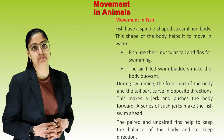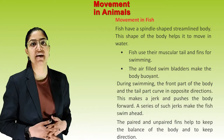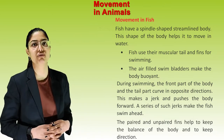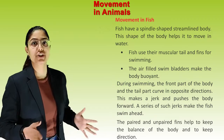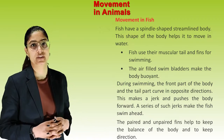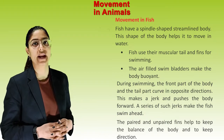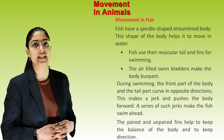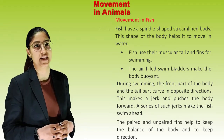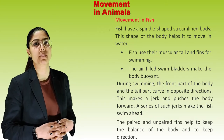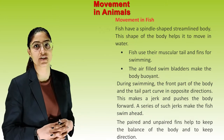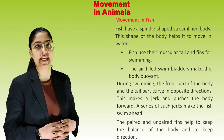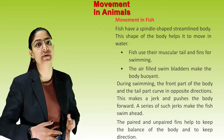Movement in fish. Fish have a spindle-shaped streamlined body, which helps them move in water. Fish use their muscular tail and fins for swimming. The air-filled swim bladders make the body buoyant. During swimming, the front part of the body and the tail curve in opposite directions, making a jerk that pushes the body forward. A series of such jerks makes the fish swim ahead. The paired and unpaired fins help keep the balance of the body and maintain direction.